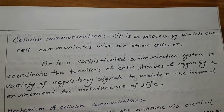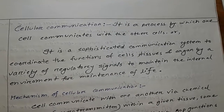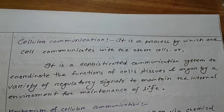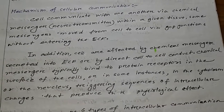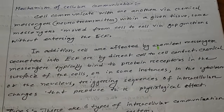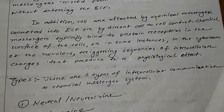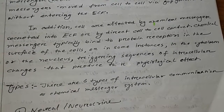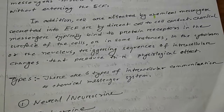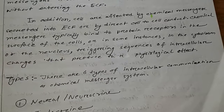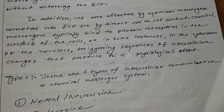Now, cellular communication. It is a process by which one cell communicates with other cells, or it is a sophisticated communication system to coordinate the function of cells, tissues, and organs by a variety of regulatory signals to maintain the internal environment for maintenance of life. Mechanism of cellular communication: cells communicate with one another by chemical messengers. Cells are also affected by chemical messengers secreted into ECF or by direct cell-to-cell contact. Chemical messengers typically bind to protein receptors on the surface of cells, or in the cytoplasm or nucleus, triggering sequences of intracellular signals that produce their physiological effect.